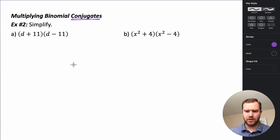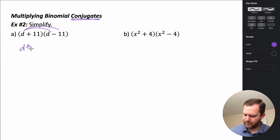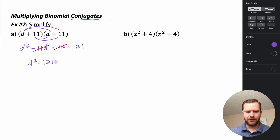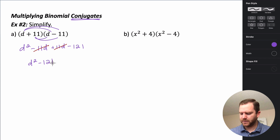For this conjugate pair, I'm going to multiply using the distributive property. I take d and multiply it through to both terms: d times d is d squared, and d times negative 11 is negative 11d. Then I multiply 11 through: 11 times d is positive 11d, and positive 11 times negative 11 is negative 121. The negative 11d and positive 11d cancel when we combine like terms, leaving us with d squared minus 121. This result is called a difference of squares — it's a difference because of the subtraction, and both d squared and 121 are perfect squares. Anytime you multiply binomial conjugate pairs, you get a difference of squares.